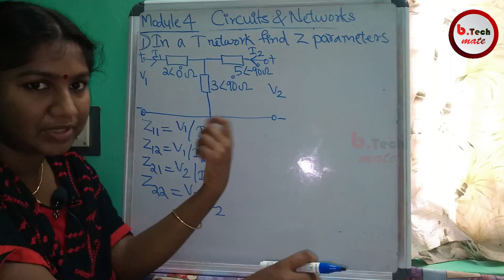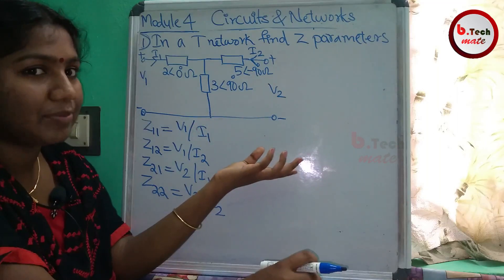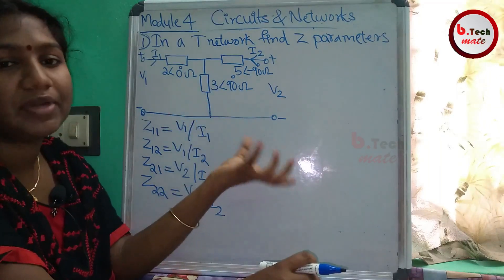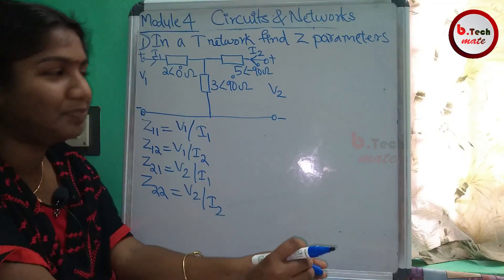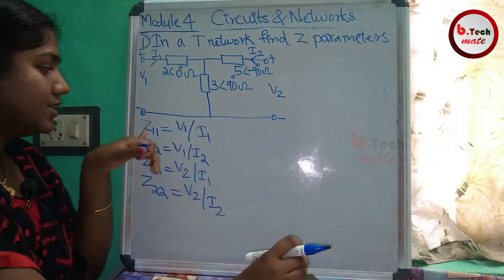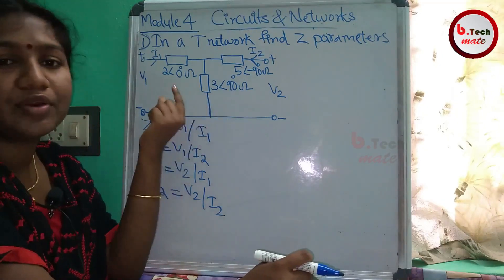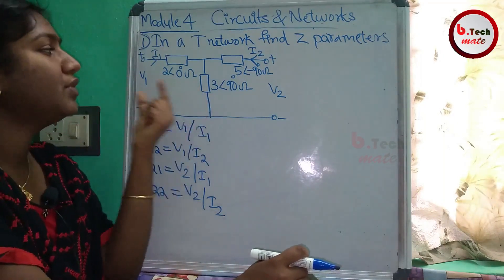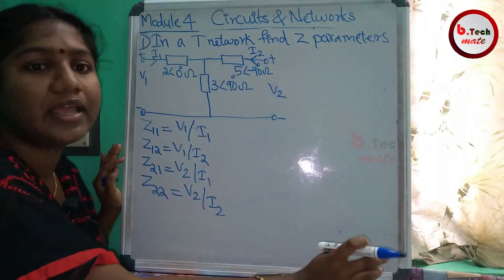I have a trick to explain the method. I have a network called T-shape. Then I have a method called Z11. If you want to see this circuit, you can see it closed. Now in these two circuits, we divide two pieces.